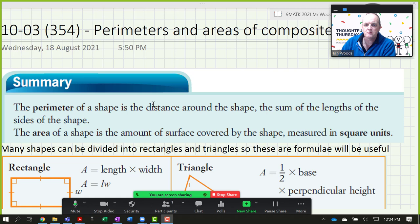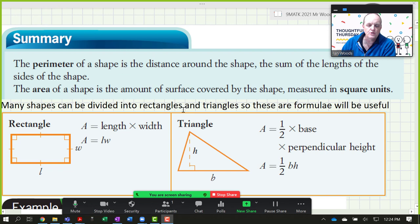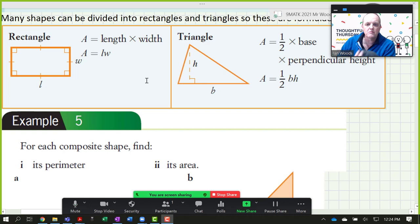This is a lesson for finding the perimeter and area of composite shapes for my 9k class. Mostly this is a review of stuff that you did in year 8. And mostly you can divide these shapes up into rectangles and triangles.